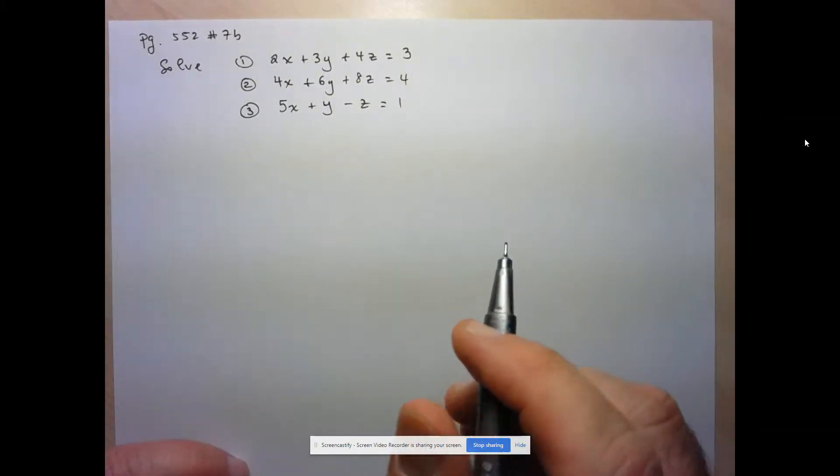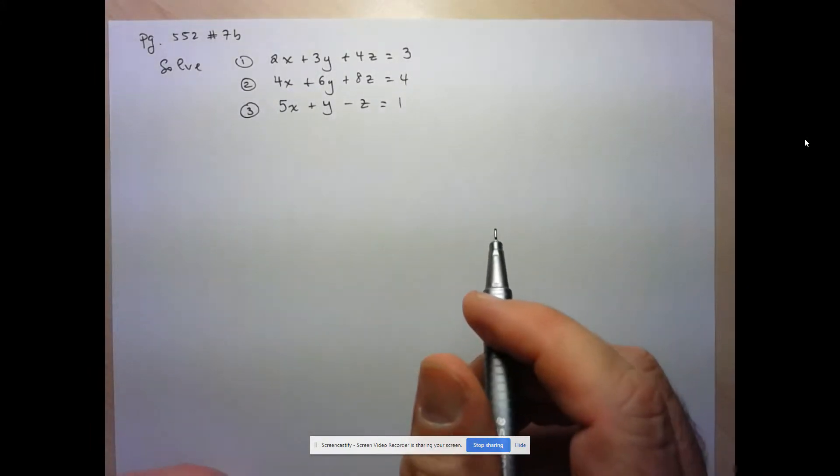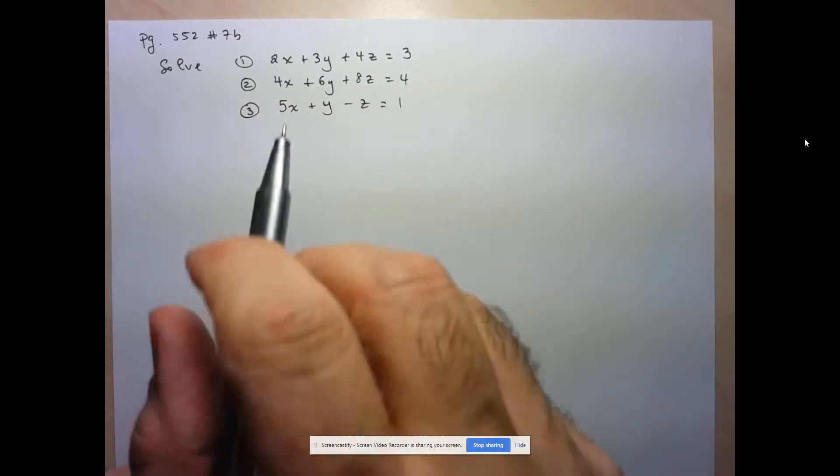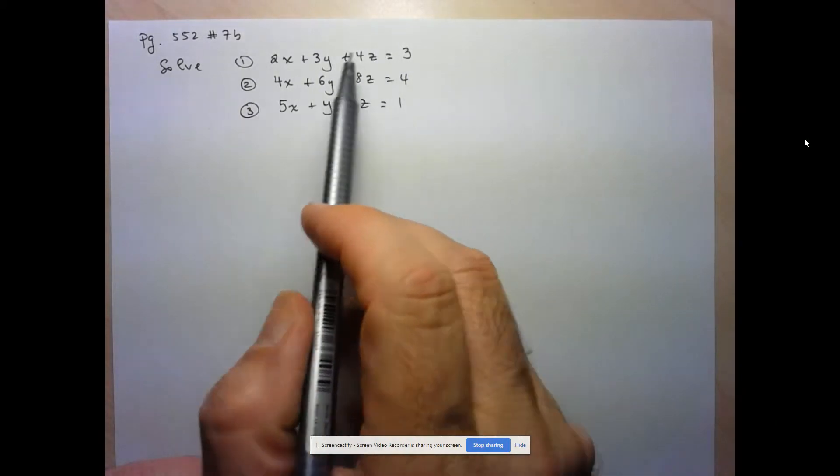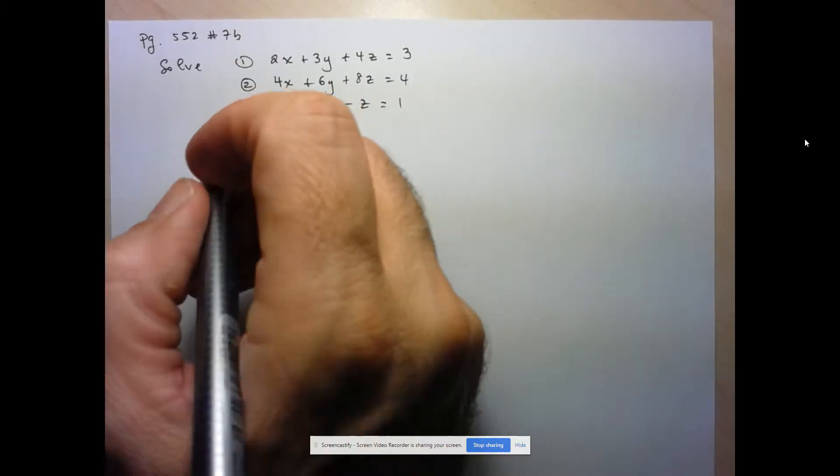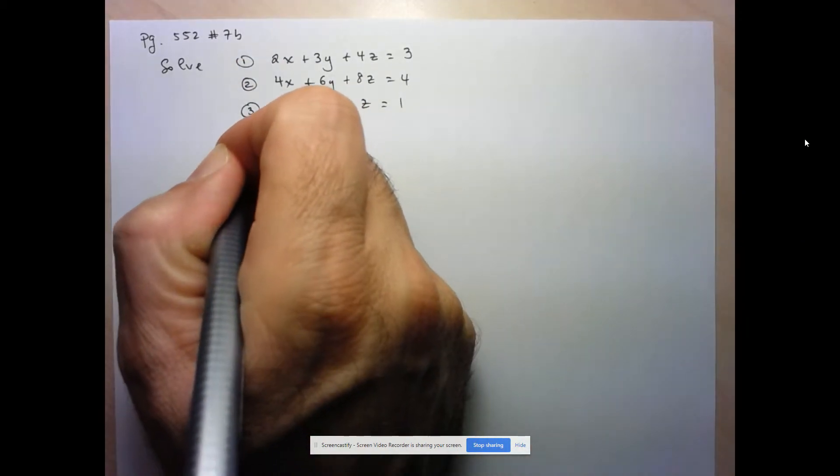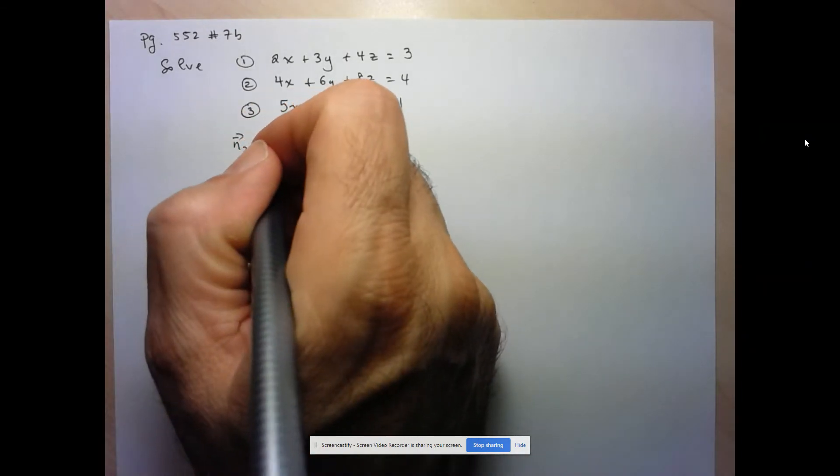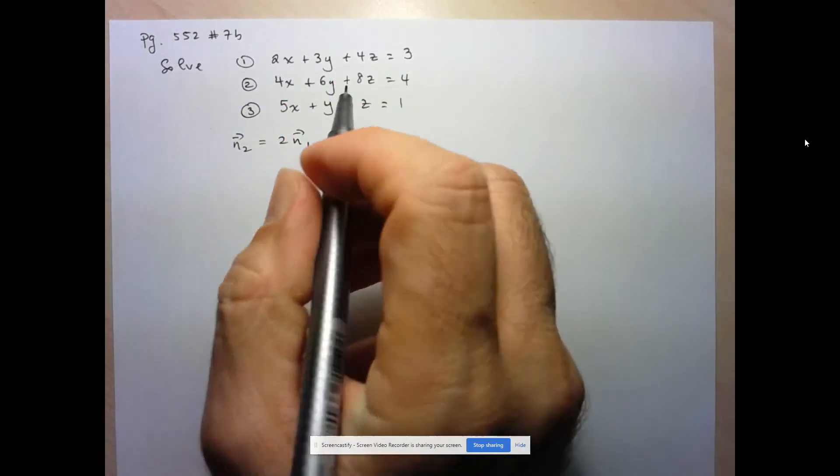So anytime you're solving a system, you want to first look to see if any of these planes are parallel. And if you look at equations 1 and 2, I can see that these are definitely parallel because the normal vector for plane 2 is 2 times the normal vector to plane 1.